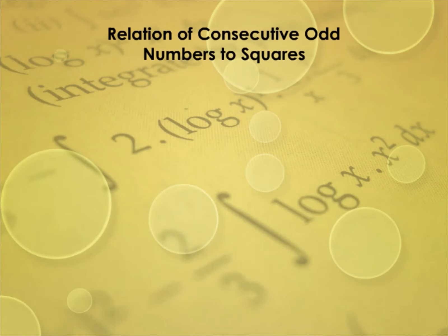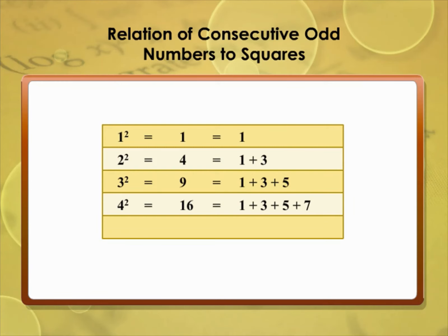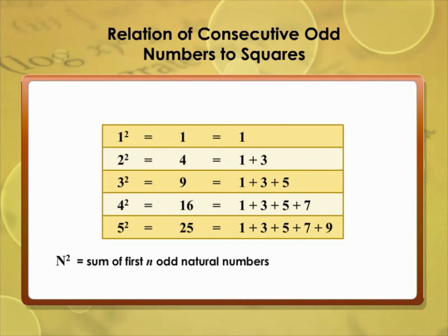Relation of consecutive odd numbers to squares: 1² = 1; 2² = 4, obtained by the sum of the first two odd numbers: 1 + 3; 3² = 9 from 1 + 3 + 5; 4² = 16 from 1 + 3 + 5 + 7; 5² = 25 from 1 + 3 + 5 + 7 + 9. In general, n² equals the sum of the first n odd natural numbers.